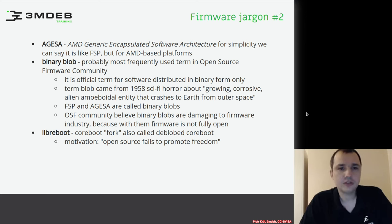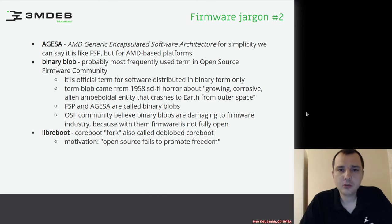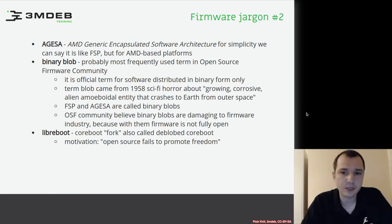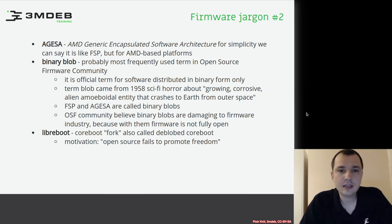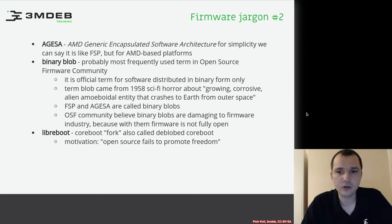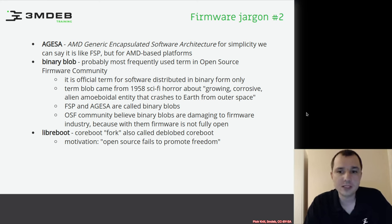The next firmware jargon term is binary blob. It's very often used in the open source firmware community. It is the official term for software distributed in binary form only — we have some binary component and don't know what's inside. It may poison our platform, deliver malware, or introduce vulnerabilities that we cannot fix. The term blob came from a really cool 1958 science fiction horror movie about a growing corrosive alien amoeboidal entity that just keeps eating and growing. Because blobs are like that — we don't know what it is, it grows in our system, we don't like blobs, and we want to eliminate them because if we leave even one small piece it will grow again.